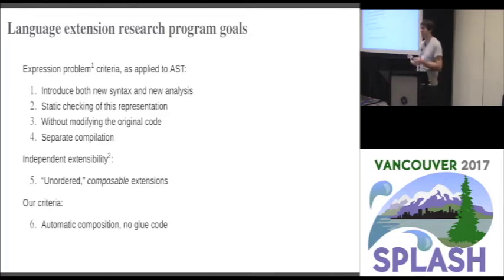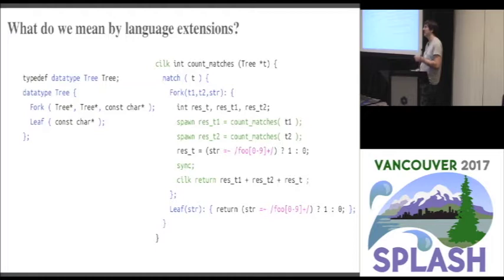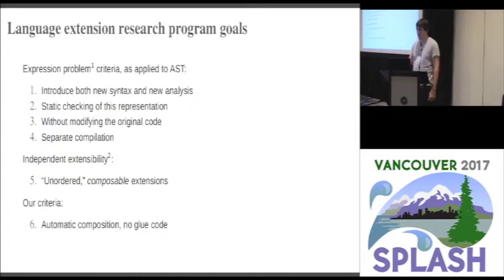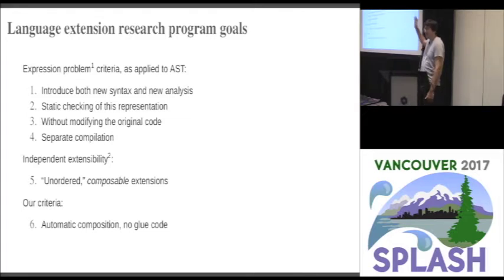The trouble with language extension is that to implement these kinds of extensions we're introducing new syntax, but we also need new tree analysis. For example, when we annotate functions with Silk, the Silk runtime requires two different functions generated from that annotation, so we have to analyze the function implementation and generate two transformed functions. We need both new syntax and new analysis, and we frame this as the expression problem applied to the abstract syntax tree. We want the ability to compose extensions that extend both of these things — this relates to what's called the independent extensibility problem, originally from Wadler.